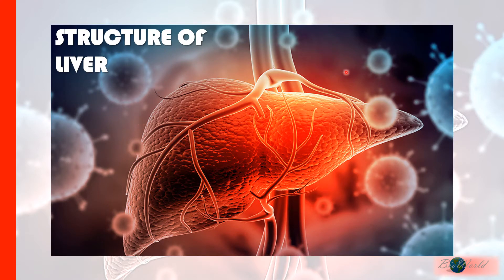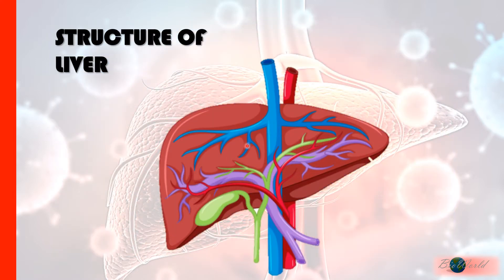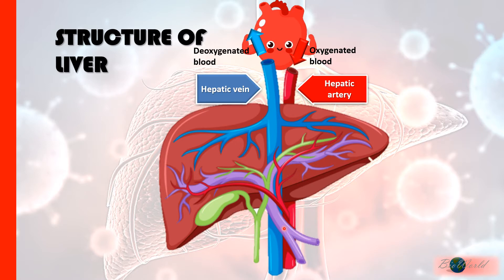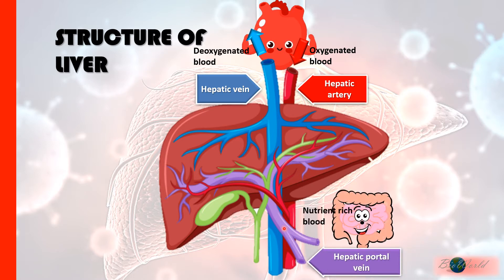The liver is positioned below the diaphragm. To the left of the liver will be the stomach, and just below the liver — to the right — will be the duodenum. The liver has three major blood vessels. Two are connected to the heart: the hepatic artery transports oxygenated blood from the heart into the liver, and the hepatic vein transports deoxygenated blood from the liver back to the heart. The third blood vessel, the hepatic portal vein, is connected to the ileum and transports nutrient-rich blood from the ileum to the liver.